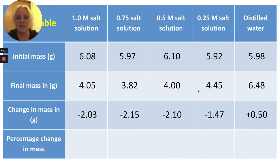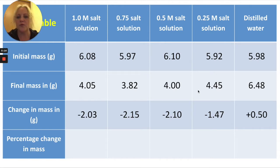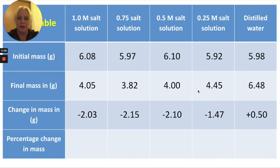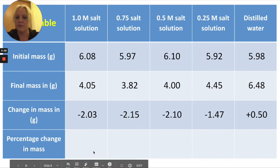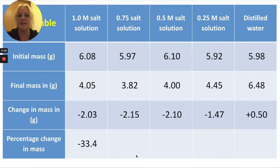To work out the percentage change in mass, we need to take the negative 2.03 — the change in mass, which has been calculated from the difference between the initial mass and the final mass. We need to work out what negative 2.03 grams is of the initial mass of 6.08. To do that, divide 100 by 6.08, then times that by negative 2.03. That gives us a percentage change in mass of negative 33.4%. It's negative because it's decreased in mass.